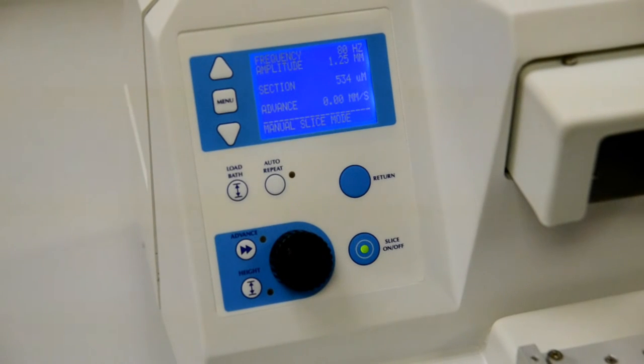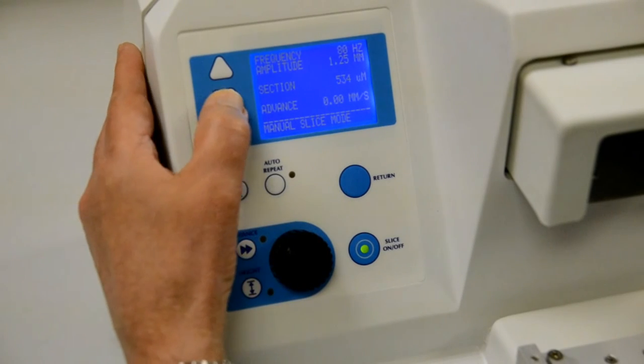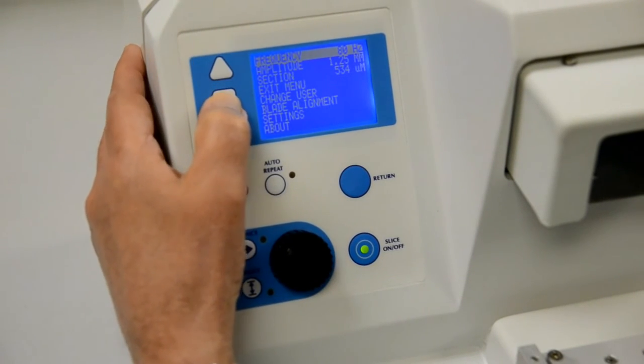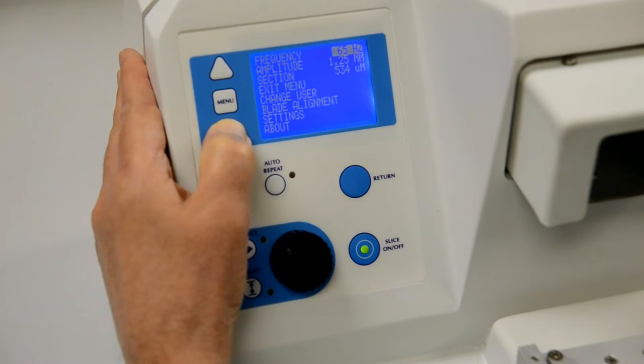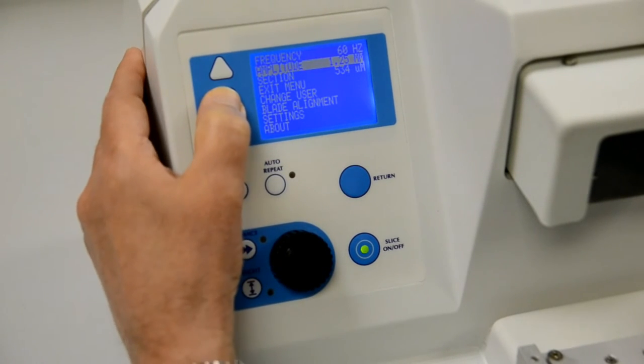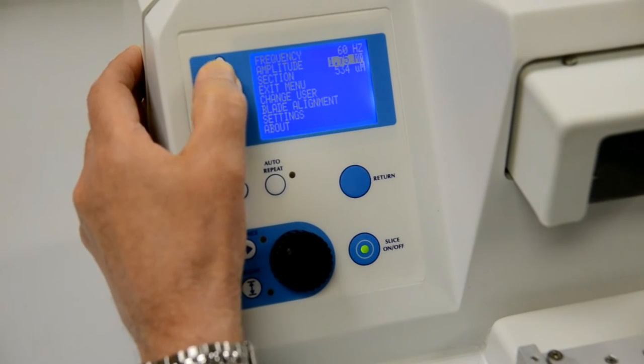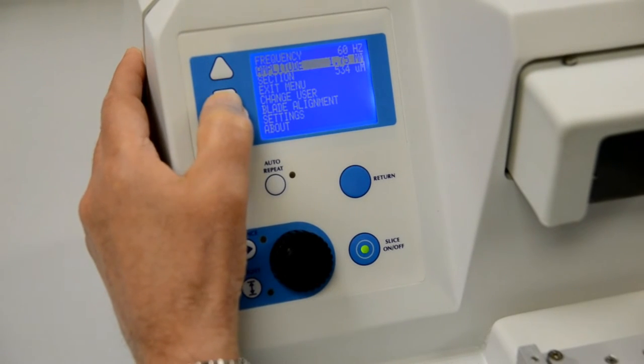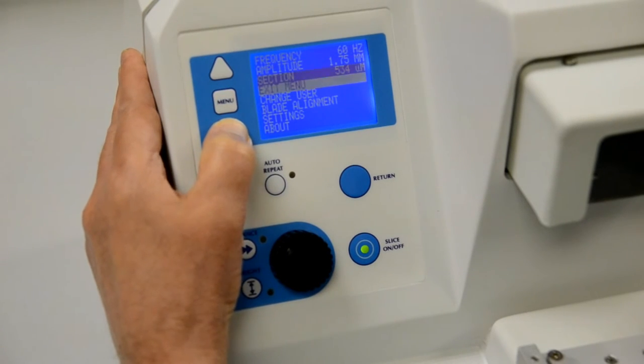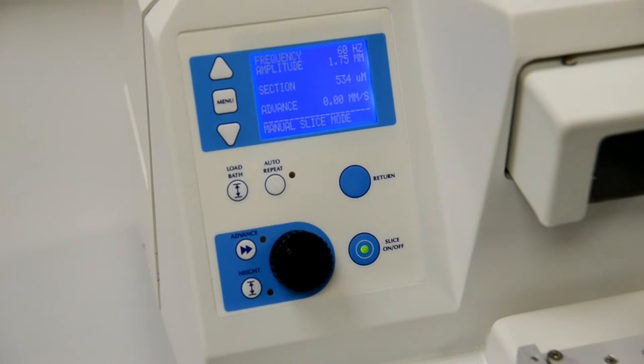Different tissue types and states require specific operating parameters such as vibration frequency, amplitude, and advance speed. Changing the frequency, amplitude, and section thickness parameters is a simple task and is accomplished with a minimal number of keystrokes. From the normal operating screen press the menu key and use the up-down arrow keys to scroll to the parameter that you want to change. Press the menu key again and then use the arrow keys to change the parameter. When you have finished, confirm your change by pressing the menu key again.